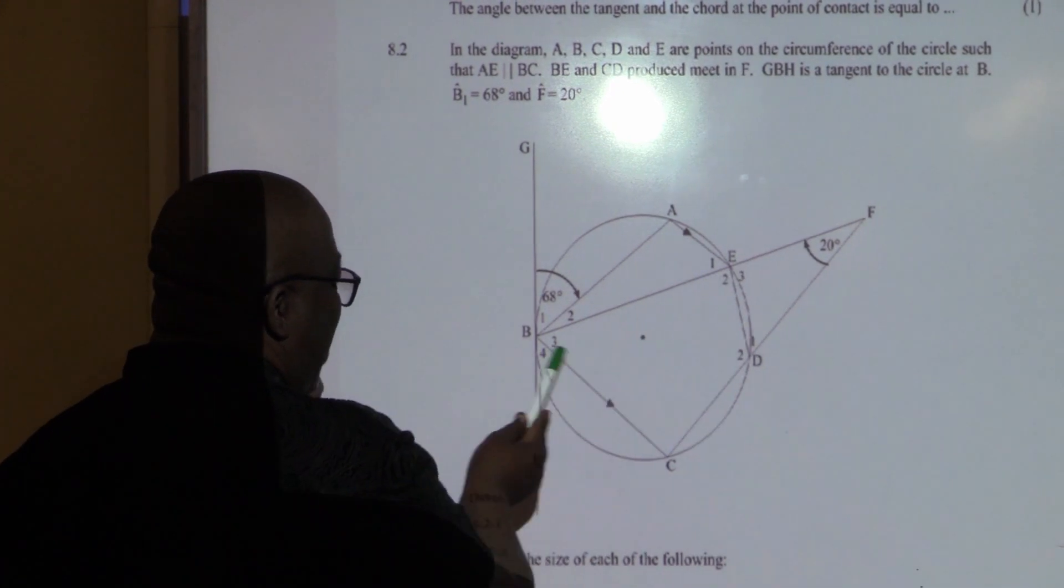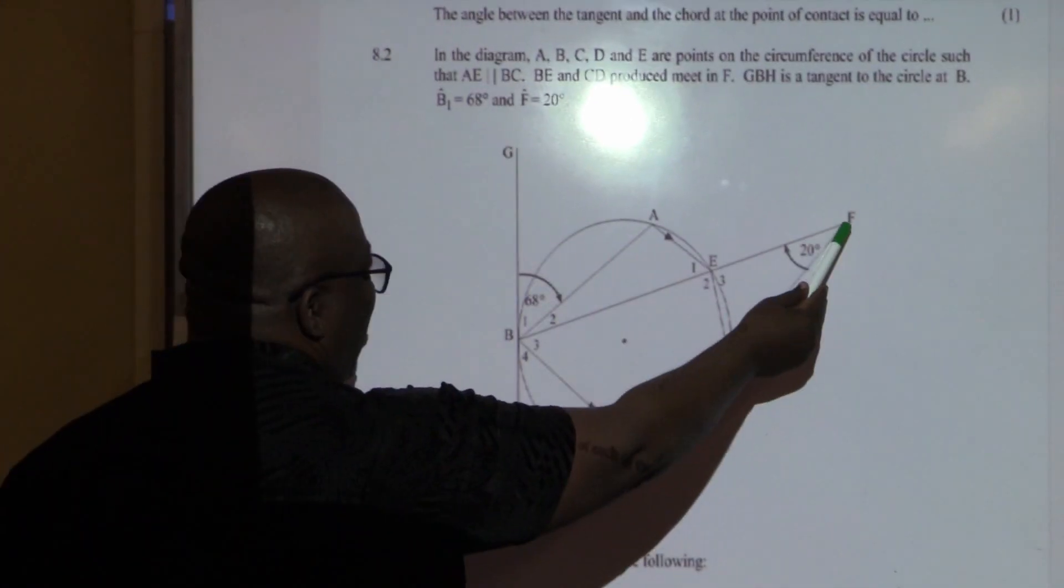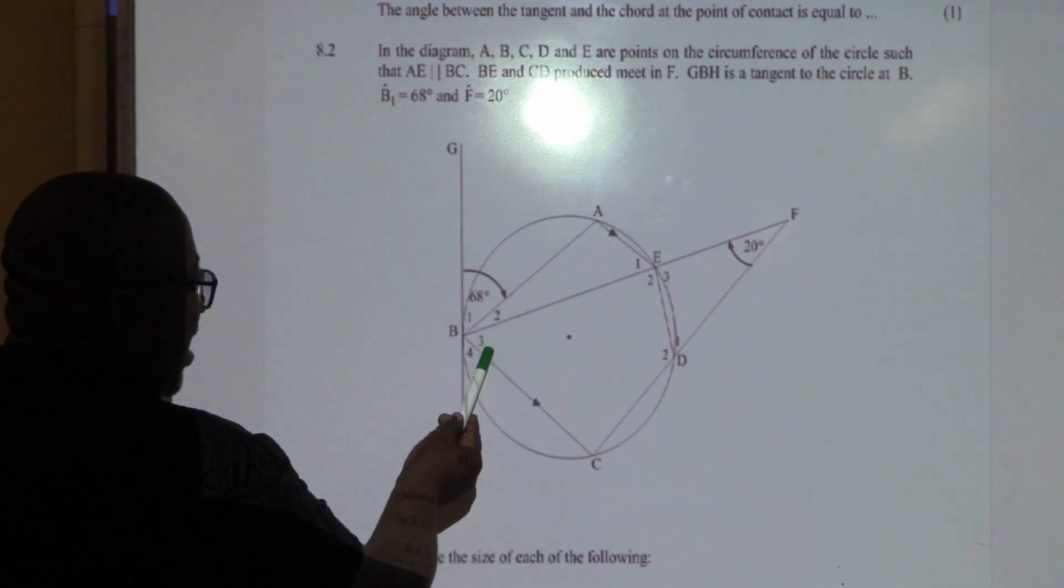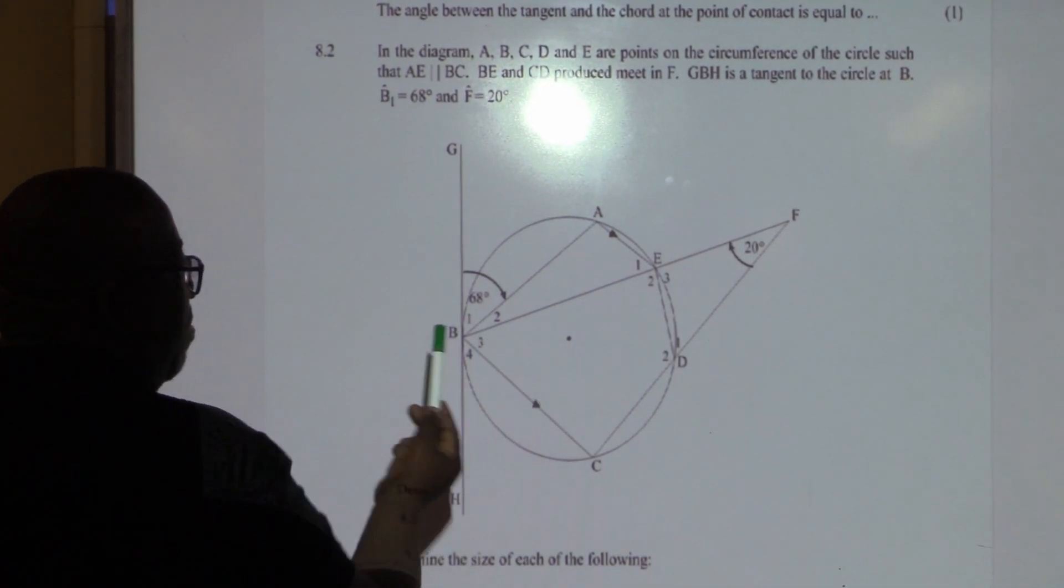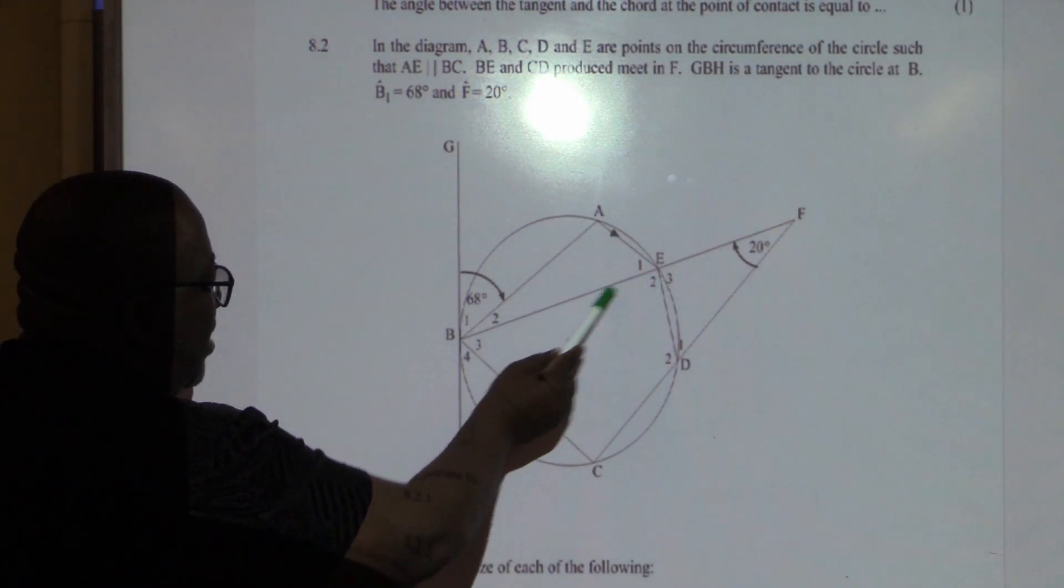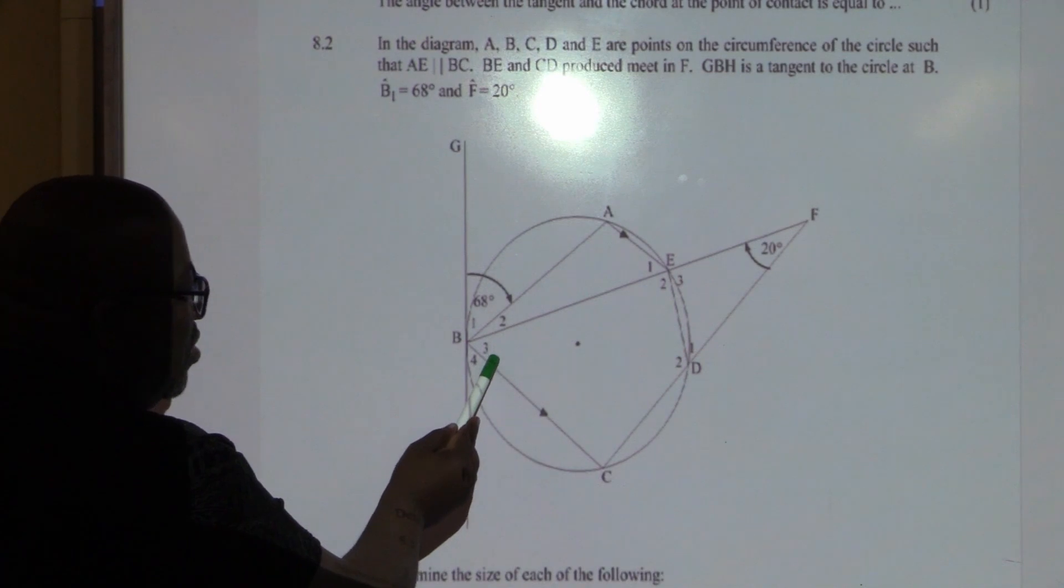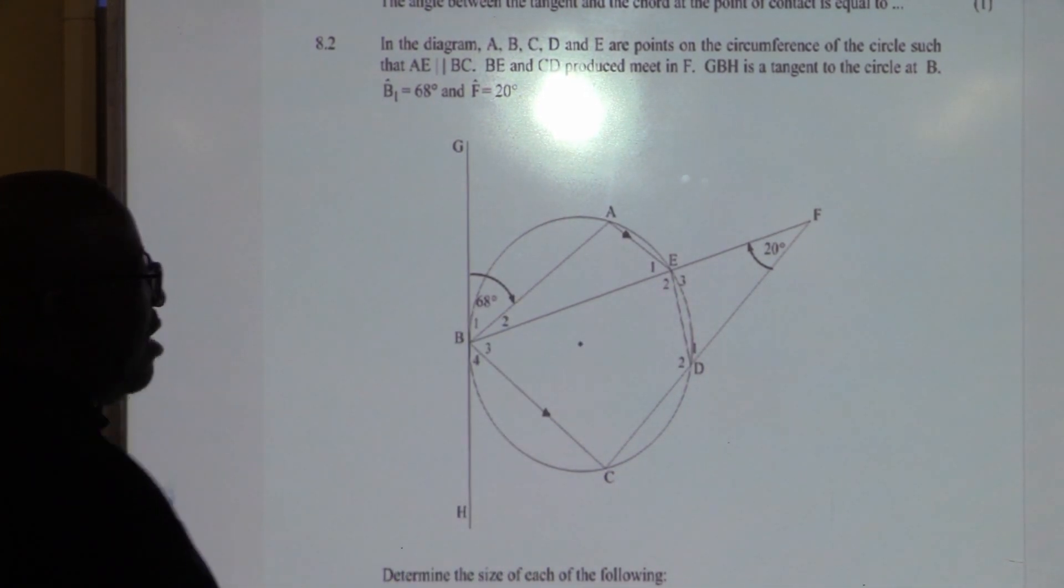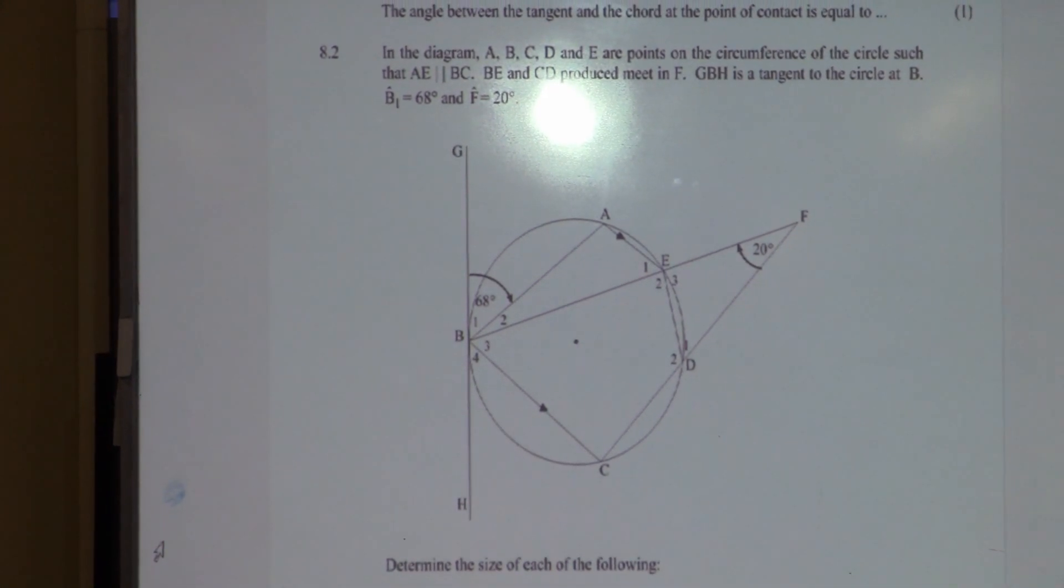So, if these lines are parallel, and this line will act as a transversal line, you must be able to see the alternate angles. That becomes important in this particular case. Others, they talk of a Z that is being formed. So, this one is equal to this one. Because these two lines are parallel, therefore, E1 is the same as B3. That's what I'm getting from the fact that the two lines are parallel.